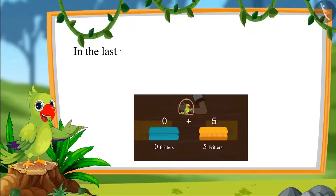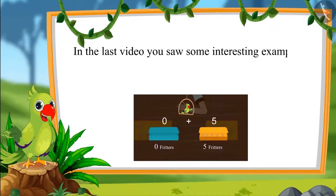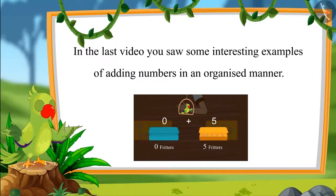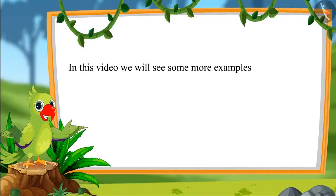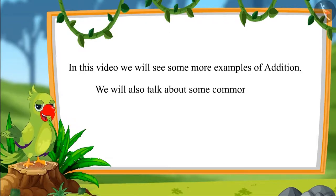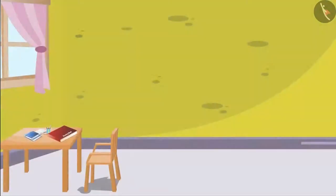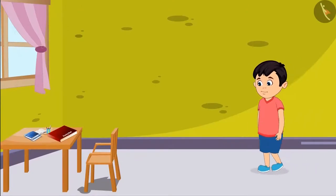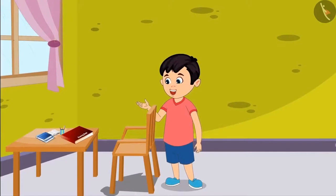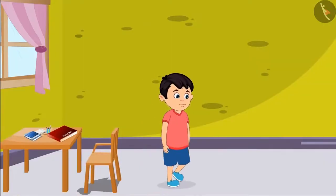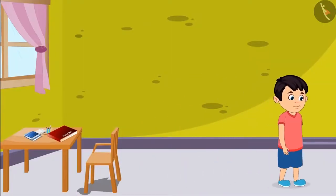So children, in the last video you saw some interesting examples of adding numbers in an organized manner. In this video we will see some more examples of addition. We will also talk about some common errors that we should avoid. Today Chotu found his coloring book on the desk. Oh wow, my coloring book! It has been so many days since I have colored in my coloring book. Chotu goes to get his colors from his almira.